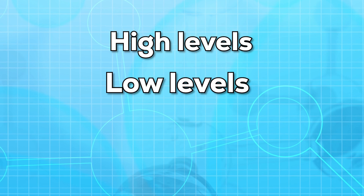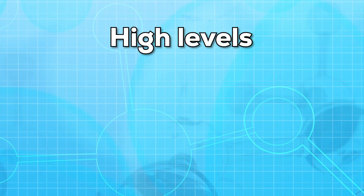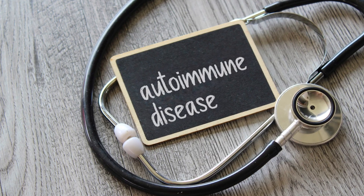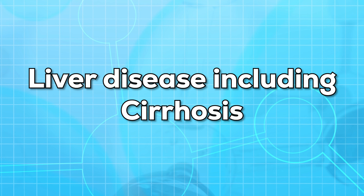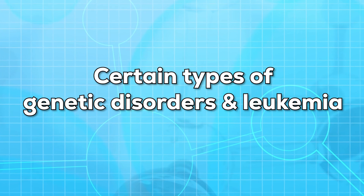Now let us talk about the results. Your results will show if you have high, low, or normal levels of protein, and also whether your AG ratio is high, low, or normal. If your AG ratio is low, it may be caused by an autoimmune disease such as lupus, a liver disease including cirrhosis, or a kidney disease. If your AG ratio is higher, it may be caused by certain types of genetic disorders and leukemia.